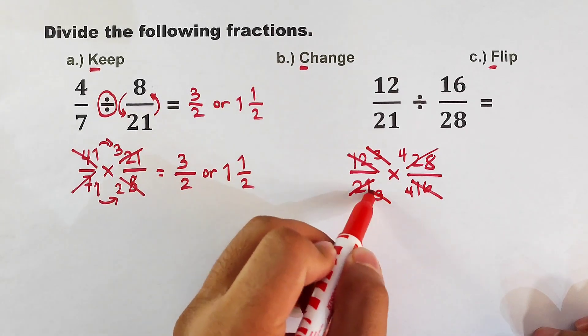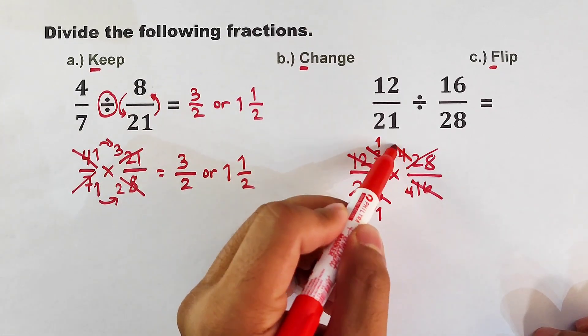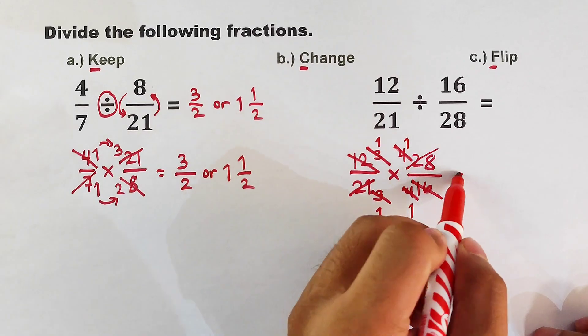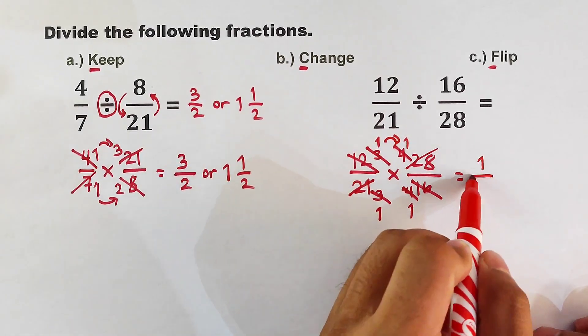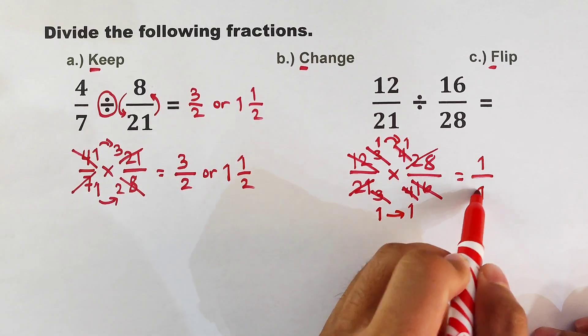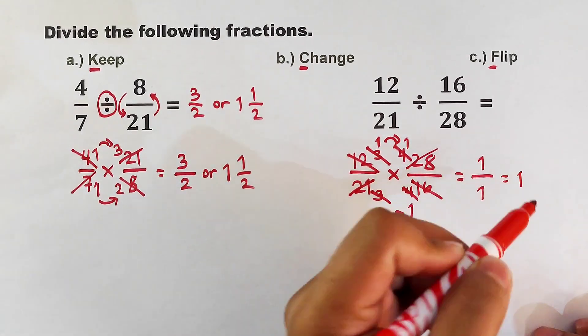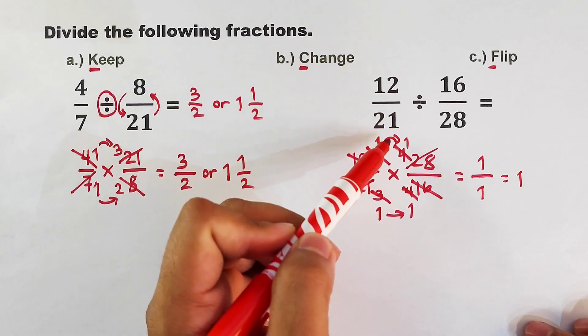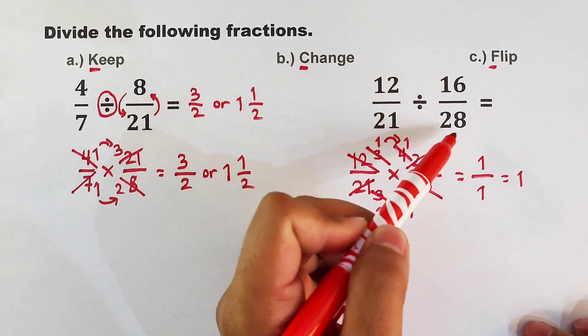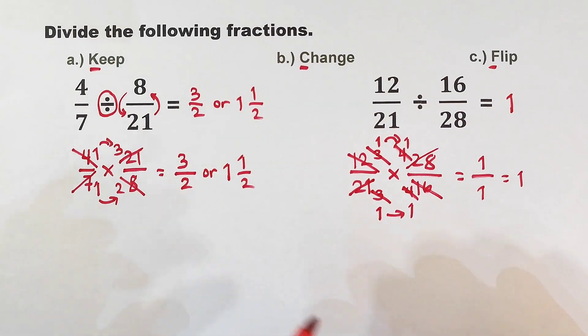We have 3 here, we also have 3 here, so we only have 1 and 1. 4 and 4, so 1 and 1. And notice, when you multiply this, this will become 1 over 1, and simplifying this number, 1 over 1 is simply 1, meaning the quotient between 12 over 21 divided by 16 over 28 is simply 1.